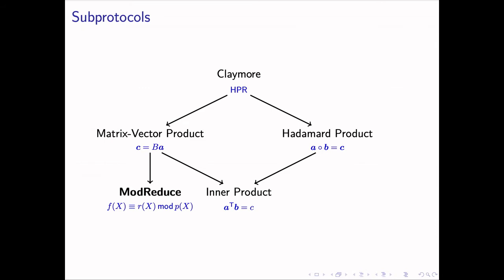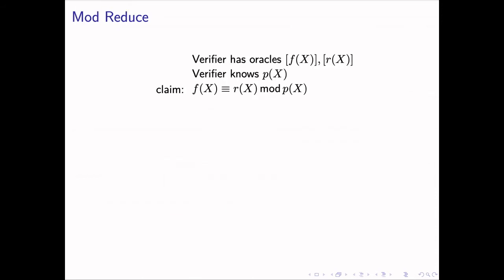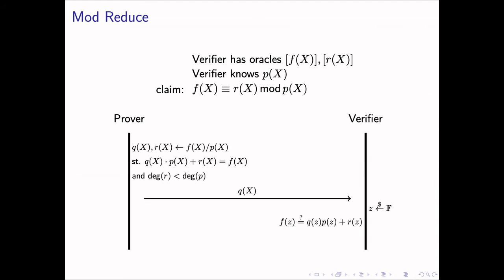We start from mod-reduce, which is not a linear algebra operation but is required in the matrix vector product protocol. The mod-reduce protocol assumes that the verifier already has two polynomial oracles F(x) and R(x) and convinces the verifier that R(x) is the remainder of F(x) divided by the public polynomial B. The protocol is straightforward. The prover divides F(x) by P(x) and sends the quotient polynomial Q(x) to the verifier, and the verifier checks the polynomial identity, deduced from the definition of polynomial division at a uniformly random point Z. The equality at these random points implies the equality of the entire polynomials, due to the Schwartz-Zippel lemma. Now the mod-reduce protocol is finished.